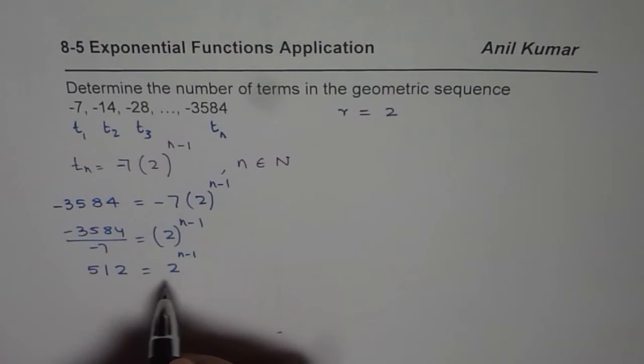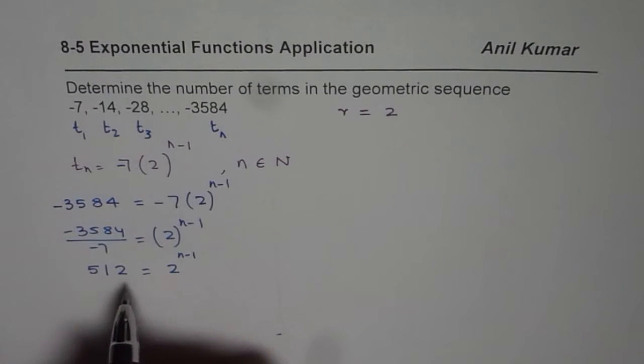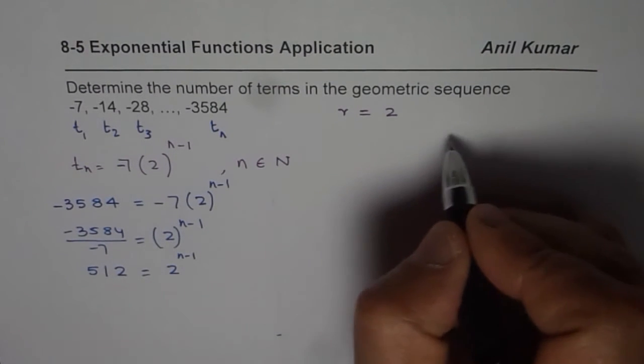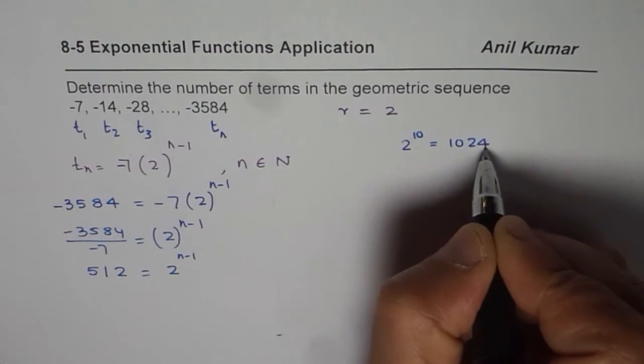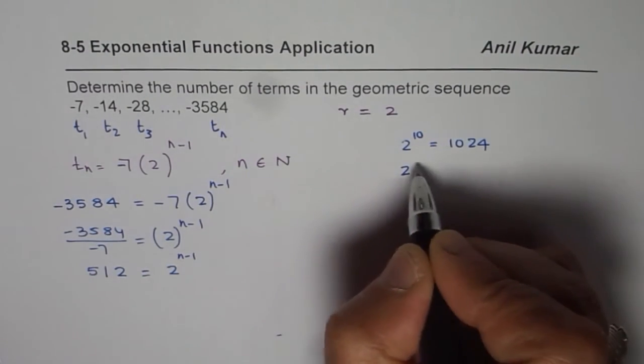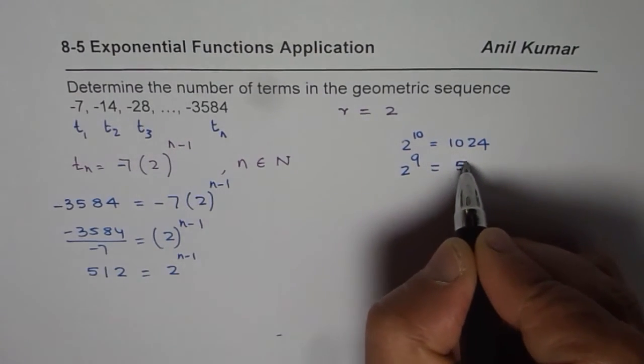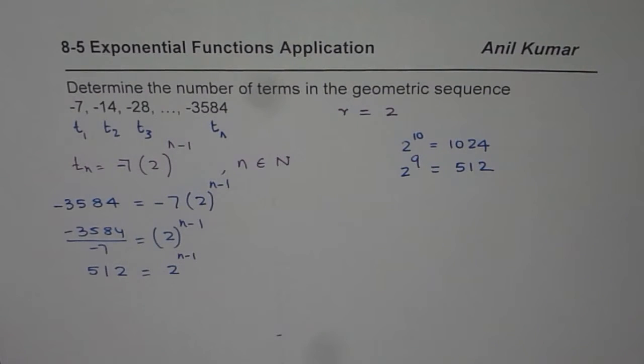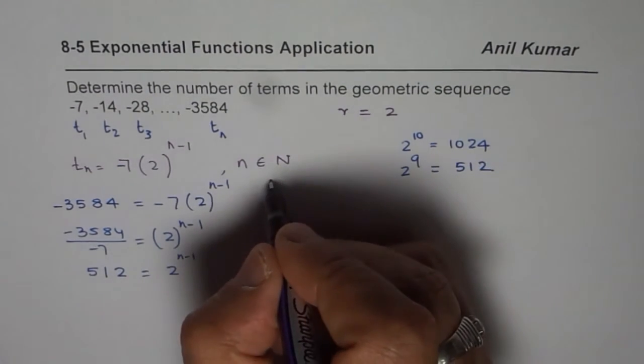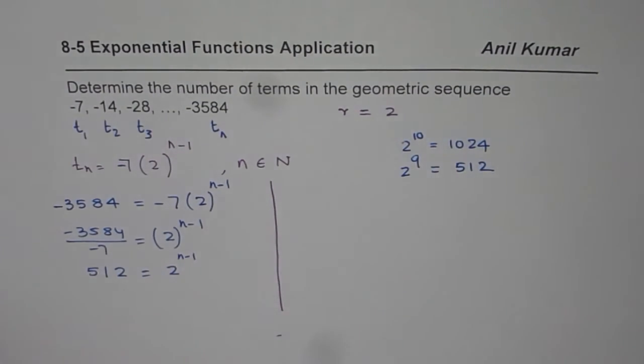Now, you could take log or you know 512 is 2 to the power of what? You should remember that 2 to the power of 10 is 1024. It is kind of easy and good to remember. So divide by 2 will give me 2 to the power of 9, which is 512.